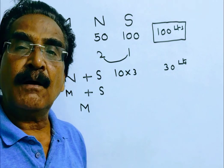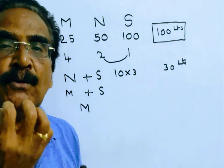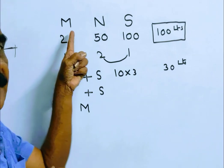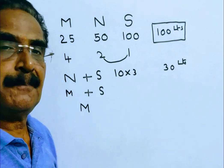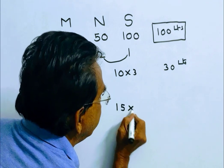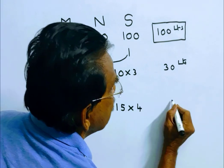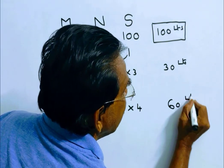That means the last 15 minutes, pipe M alone worked. What is the capacity of pipe M? M can fill 4 liters per minute. So in the last 15 minutes, pipe M can fill 15 into 4, 60 liters.